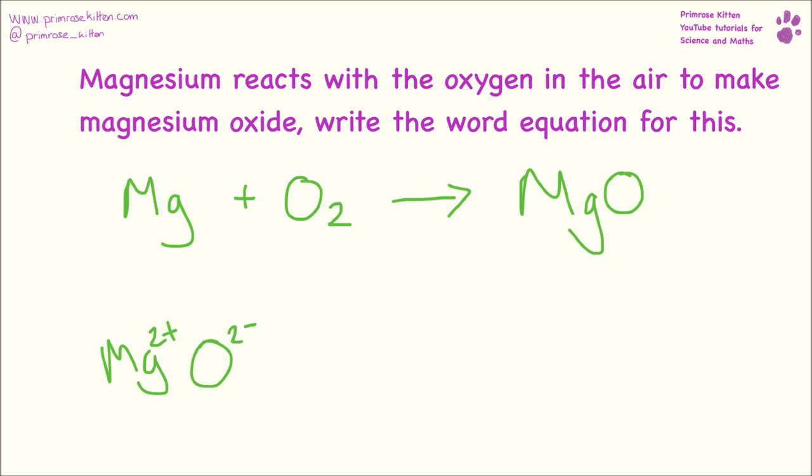Oxygen is going to make 2 minus ions. So magnesium oxide is MgO. If you are unsure about how to make the formula of ionic compounds, go and check out my separate video on this. This is something you need to know really well. Two oxygen on the left hand side. So we need to put a 2 in front of there and a 2 in front of there to balance it.